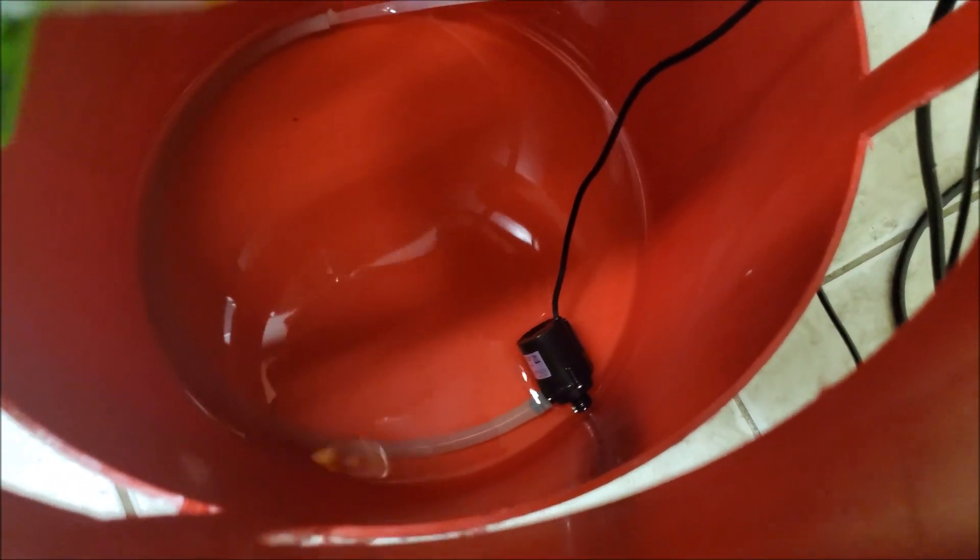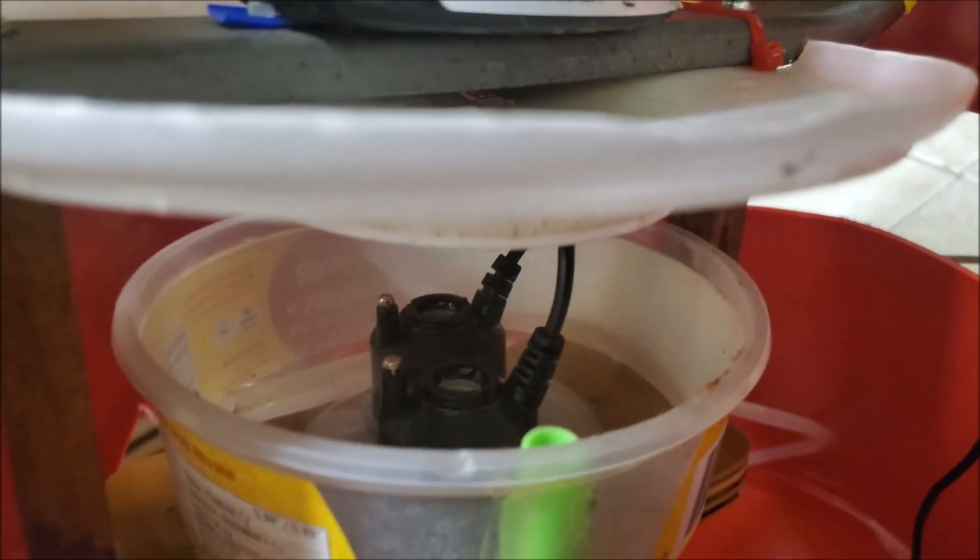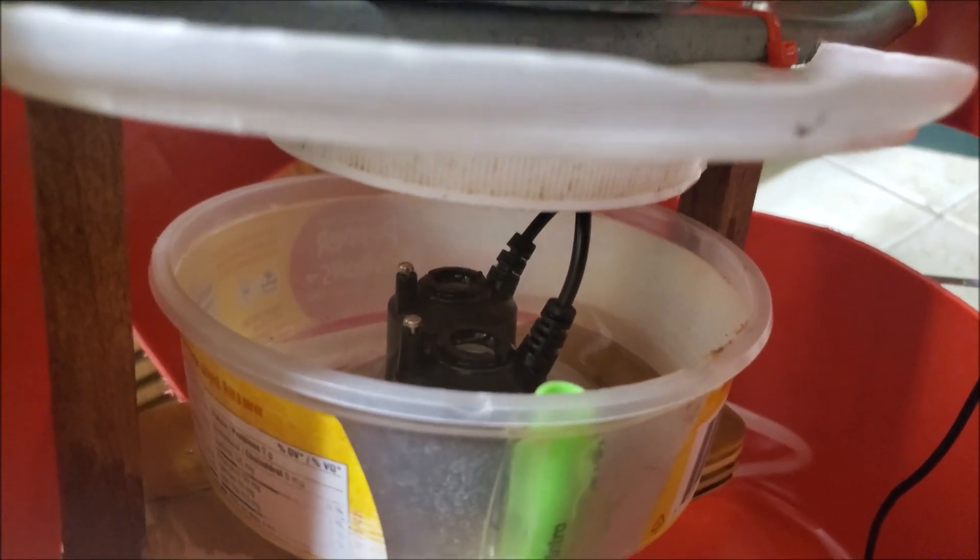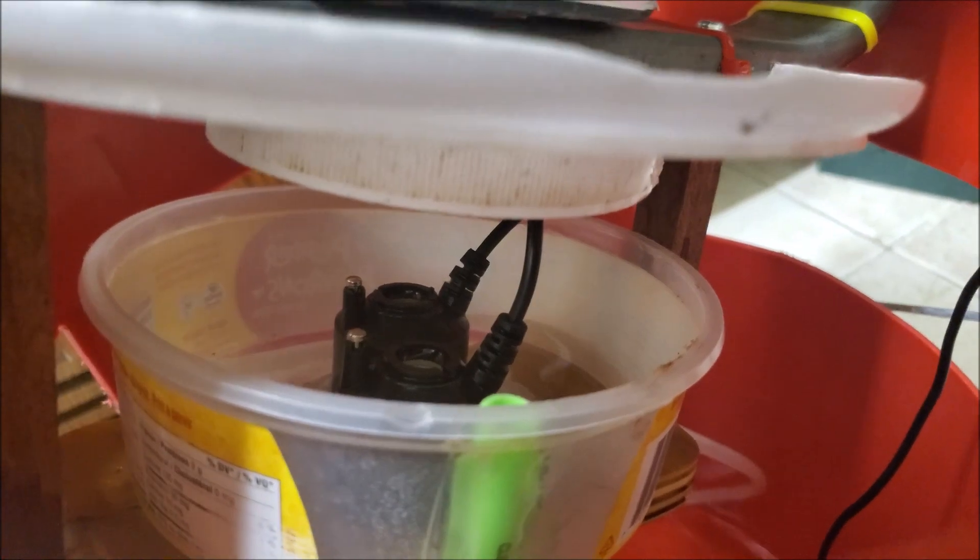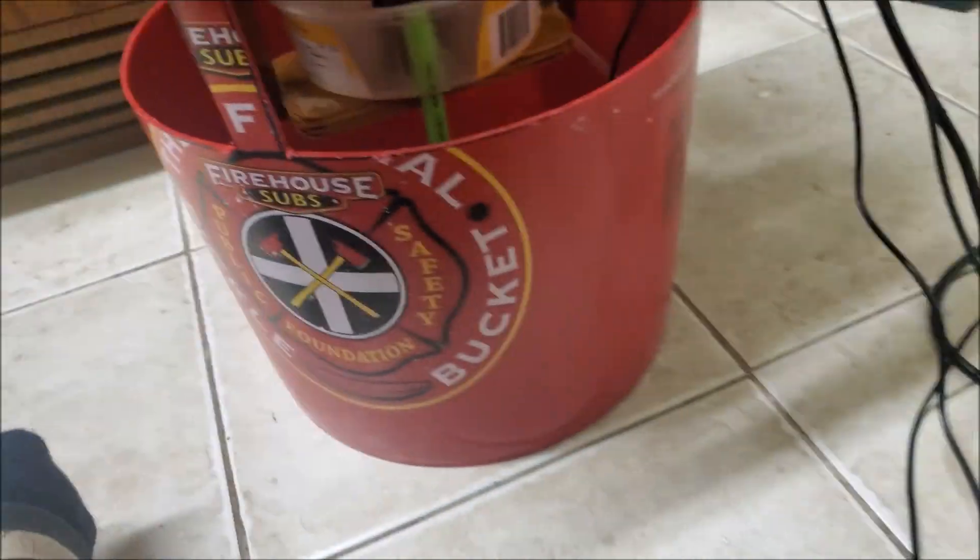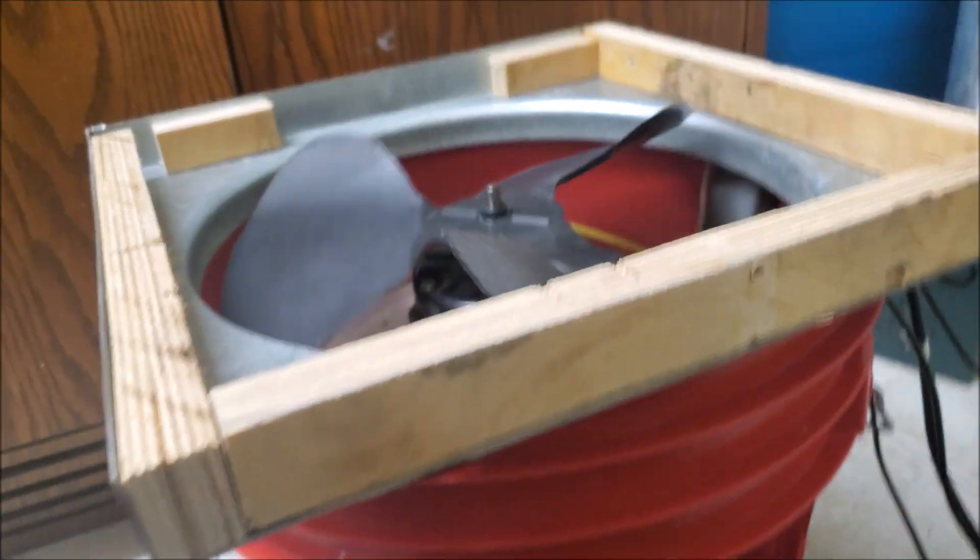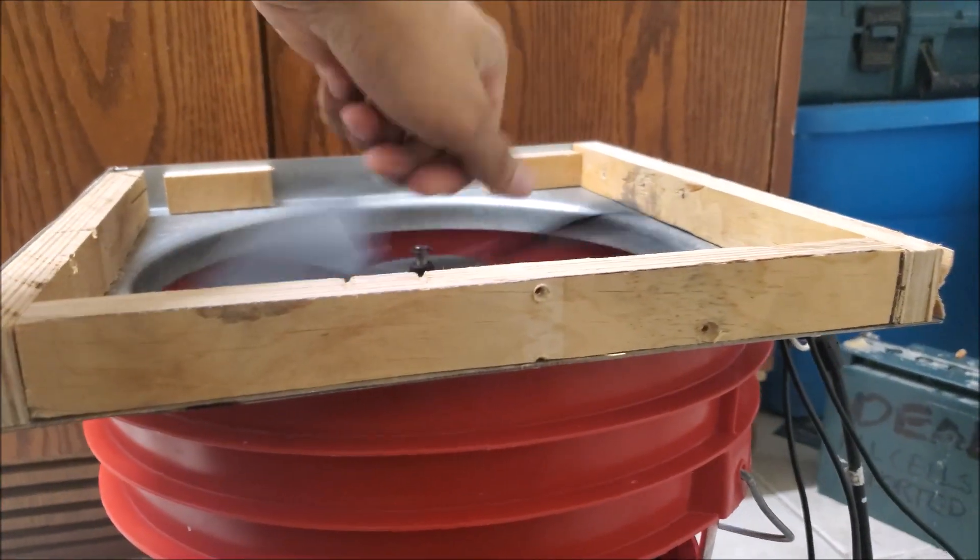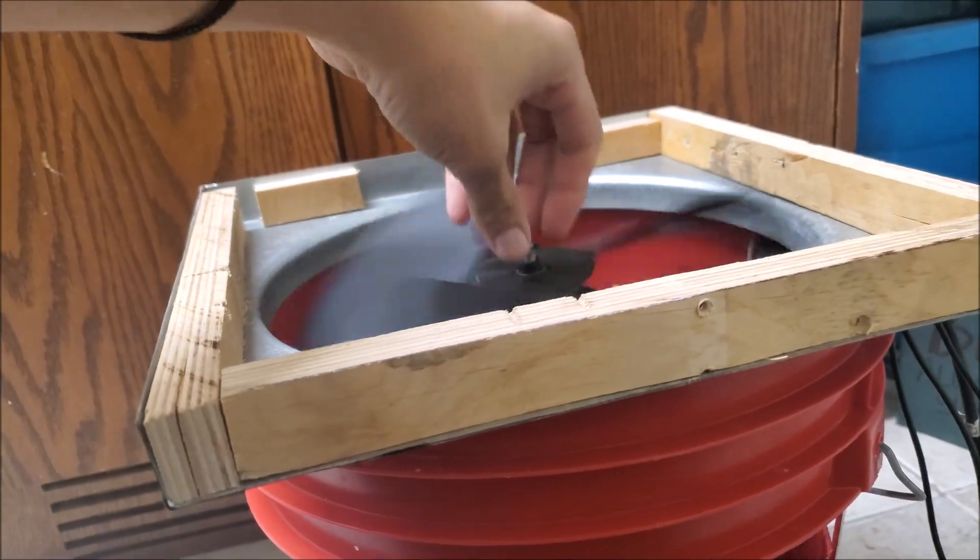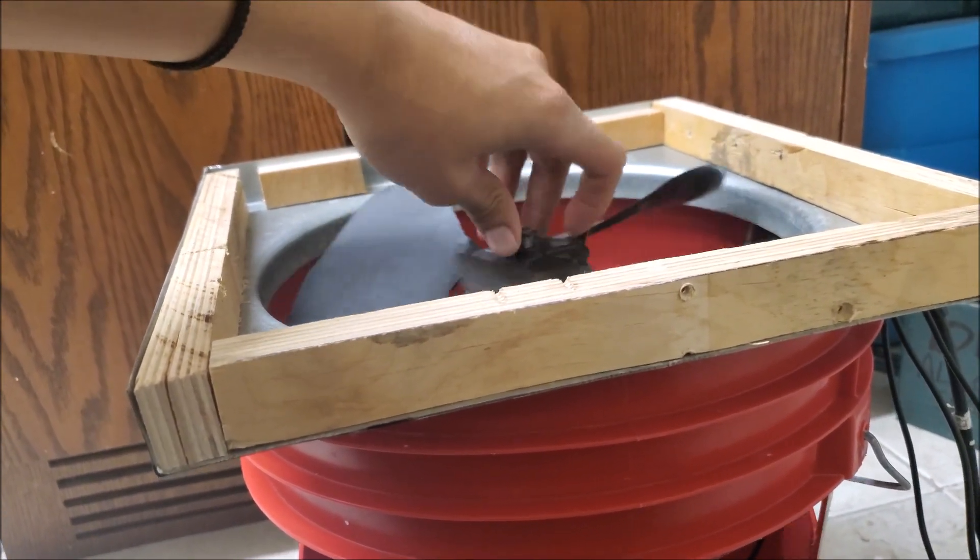So essentially what happens is that water pump pumps water up into this sump where the ultrasonic mist makers are. The mist makers do their thing, they make their mist, and then the fan is blowing air straight this way. And then the mist is picked up and goes up through the fan and out. And the reason I picked such a big fan is to disperse the humidity faster because this is meant to be high output.